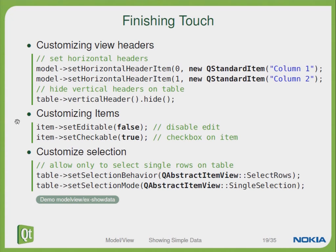We can also customize the items. Every item has its own flags where we can, for instance, make it editable or checkable, which means a checkbox will appear in the view. For customizing the selection behavior, we can set the selection behavior to select different rows or columns, and we can set the selection mode for single or multiple selection. Further modes are available which you can read about in Qt Assistant.